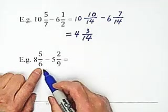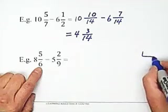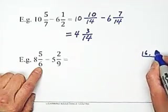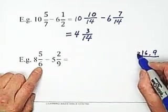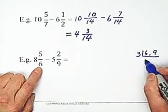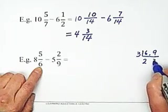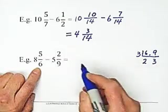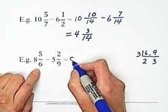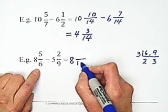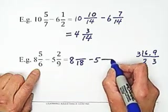Second, to find the least common denominator with 6 and 9, we can do this way. 6 and 9, the common factor is 3. Divide 6 by 3 equals 2. Divide 9 by 3 equals 3. The common denominator is 18. So we write 8 over 18 minus 5 over 18.